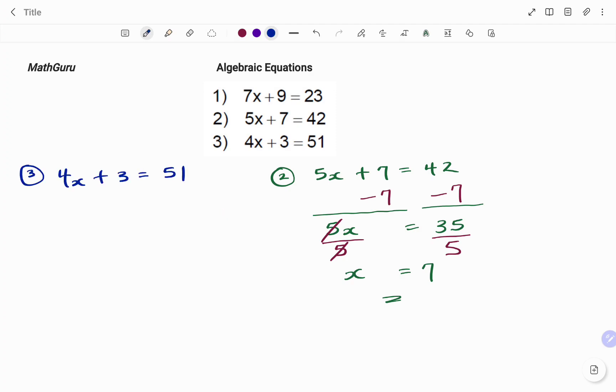In the last example, I have 4x plus 3 equals 51. Please don't forget to click on the like and subscribe button below for more easy-to-understand math concepts.